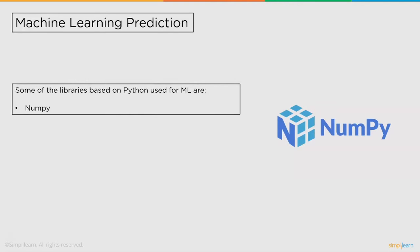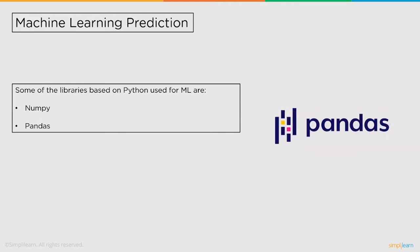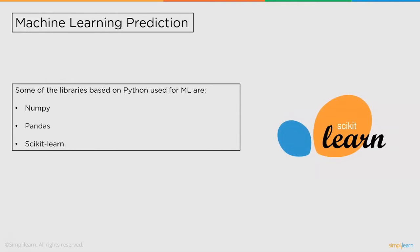First, NumPy. NumPy adds support for large, multi-dimensional arrays and matrices along with a large collection of mathematical functions to operate on these arrays. Next, we have Pandas. Pandas offers data structures and operations for manipulating numerical tables and time series. After that, we have Scikit-learn, a machine learning library for Python. It features various classifications, regressions, and clustering algorithms, including support vector machines and other algorithms.